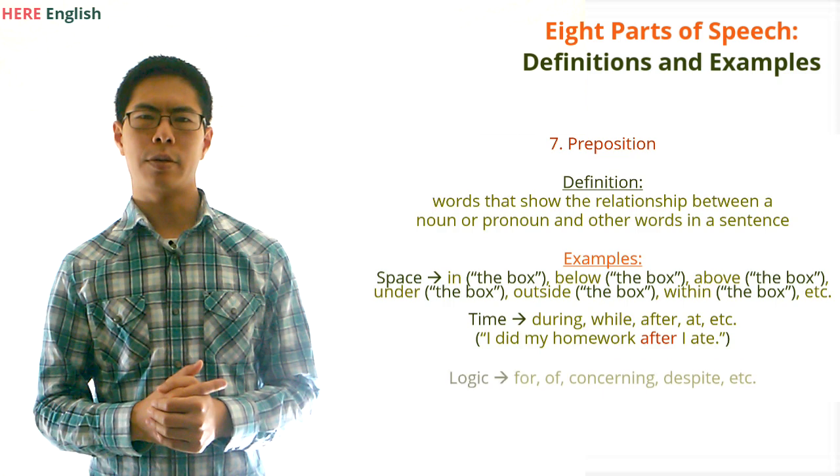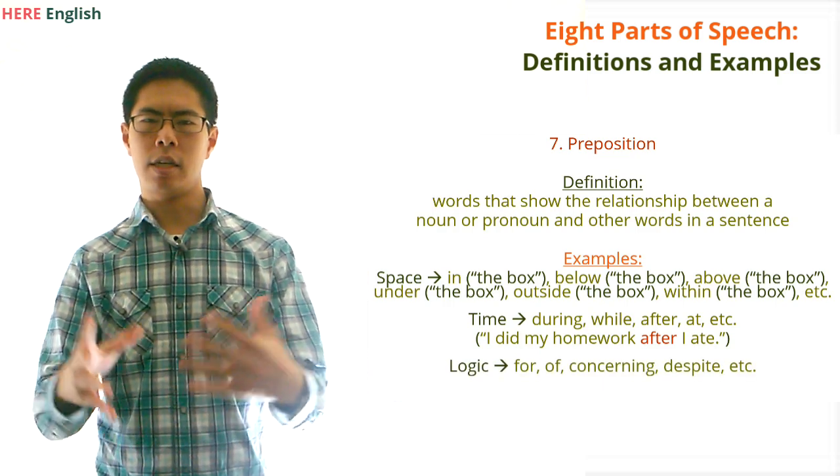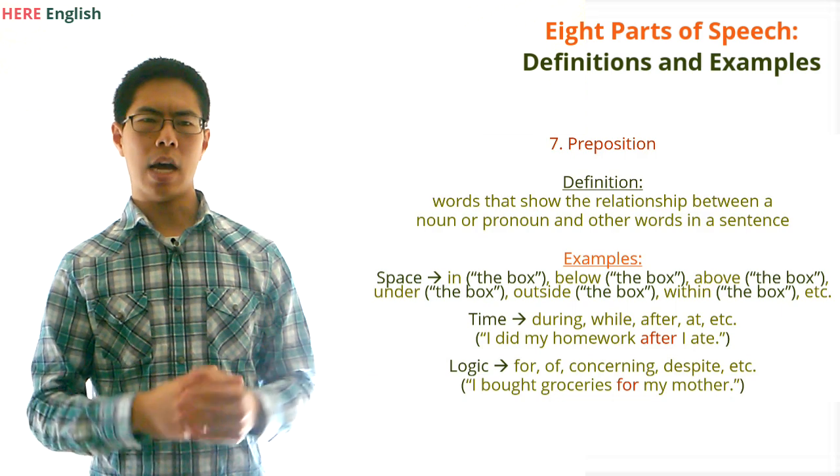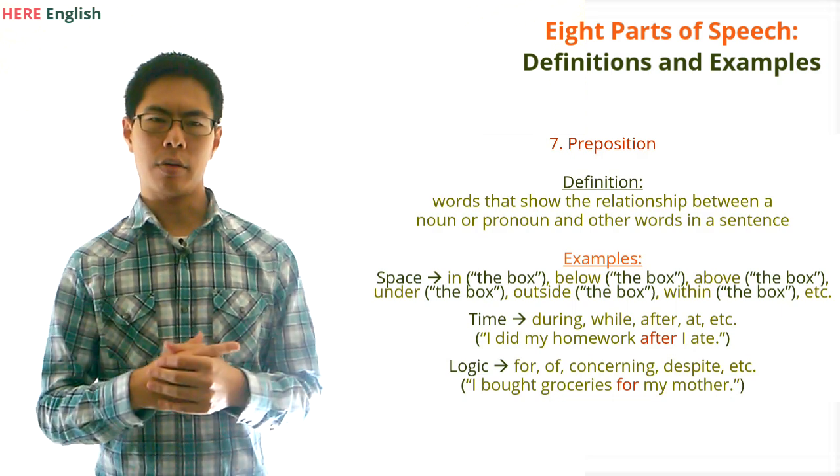Examples of prepositions that express a relationship in terms of logic are words like for, of, concerning, and despite. For example, in the sentence I bought groceries for my mother, the preposition for tells us why I bought groceries.